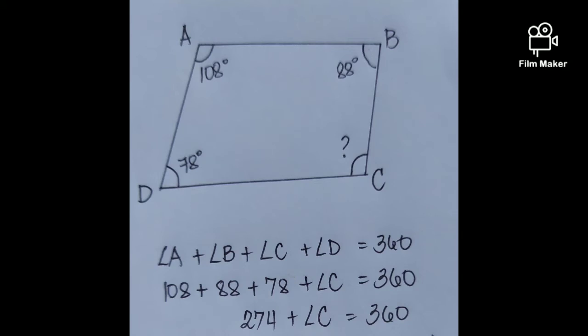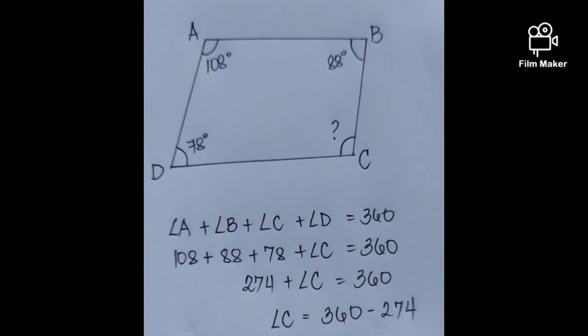So 108 plus 88 plus 78 is equal to 274, and then plus angle C equals 360. And then we transpose the 274 to the right side of the equation. So angle C is equal to 360 minus 274.